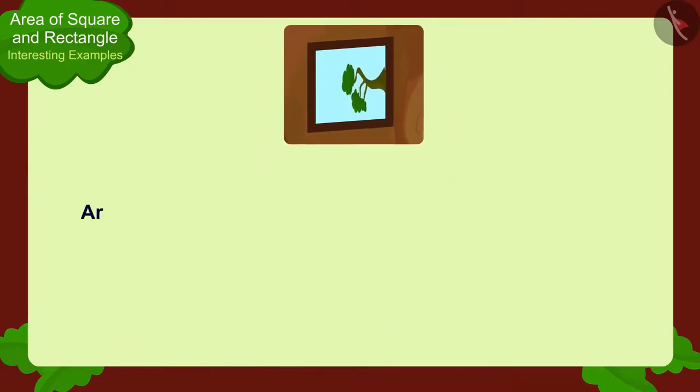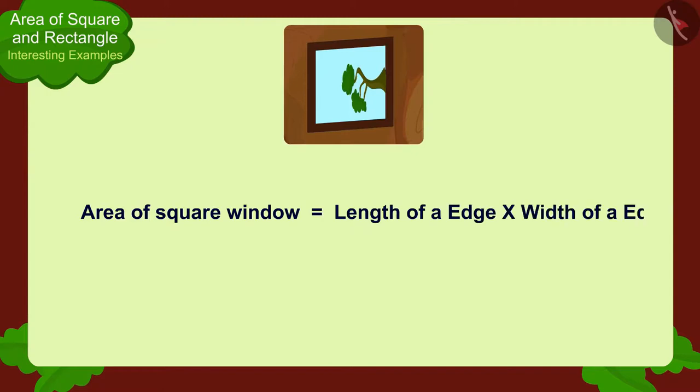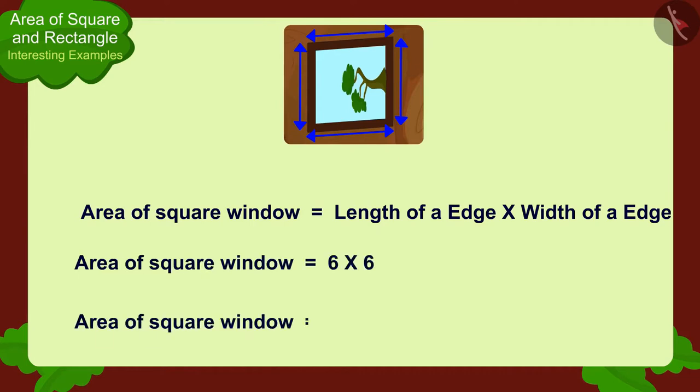We can find the area of the square window by multiplying its length and width. But, do you remember children, that all edges of a square are exactly the same? Therefore, the measurement of the length and width of this square window will be exactly the same, six meters. In this way, the area of the window would be six times six, 36 square meters.